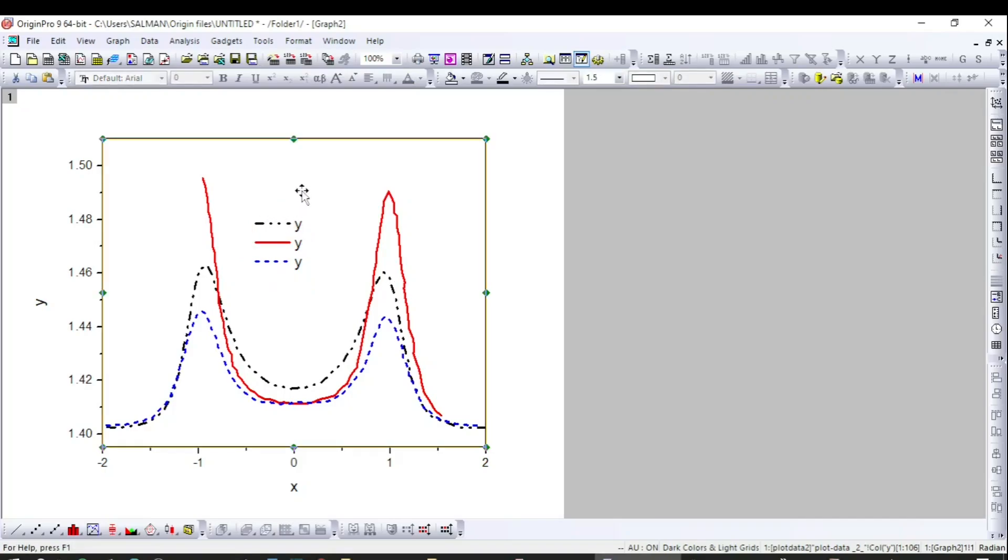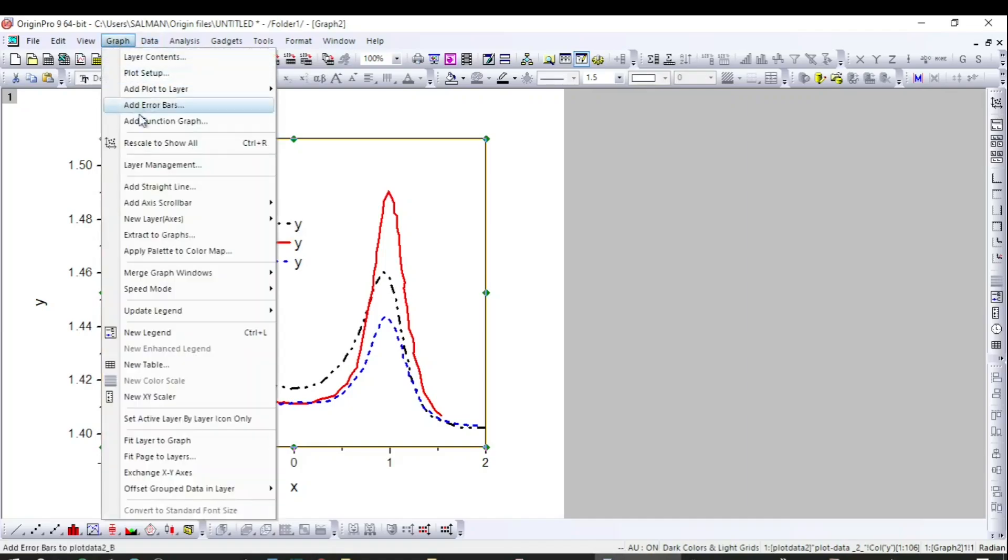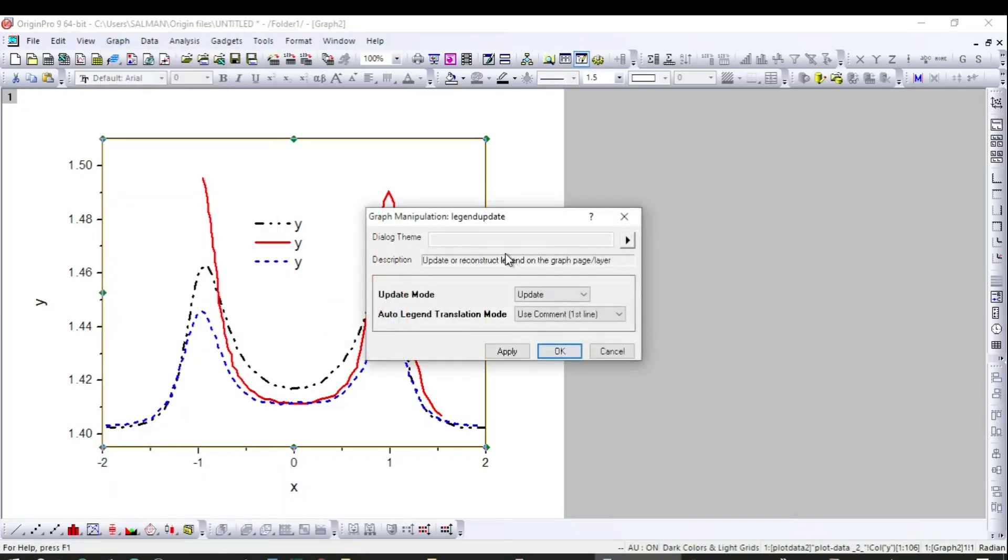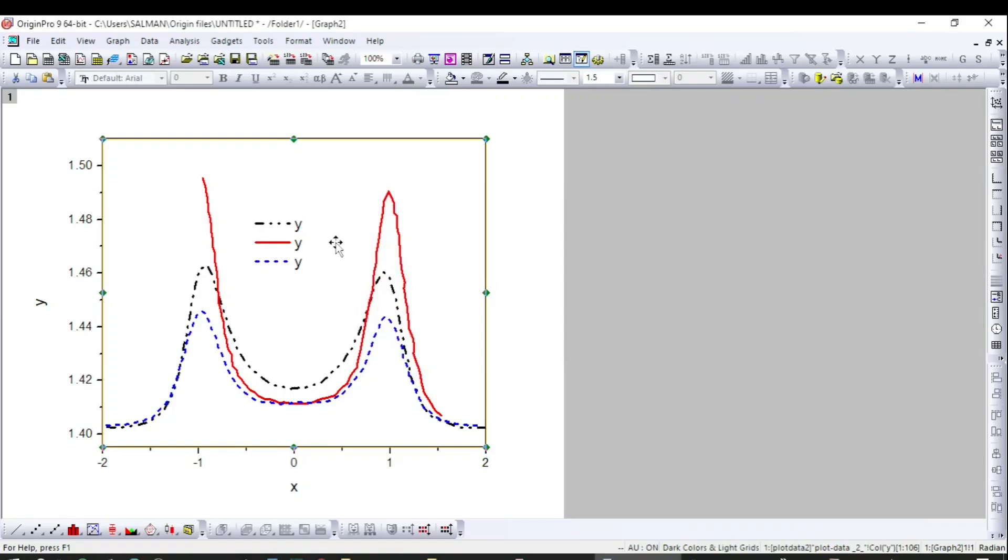And there is another way to update the legend. You just need to come to graph, and then come down to update legends option, and then click on open dialog box. The dialog box is open, and here you can change these things, use commands, and you can add, update, or reconstruct. There are two options available in this box. So I just click on OK, and that would update the legends on the plots.